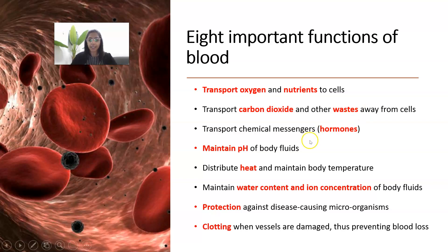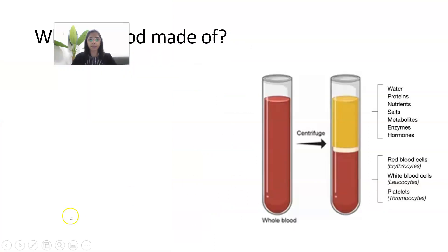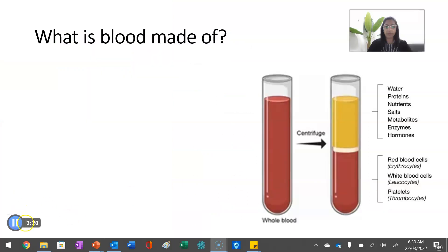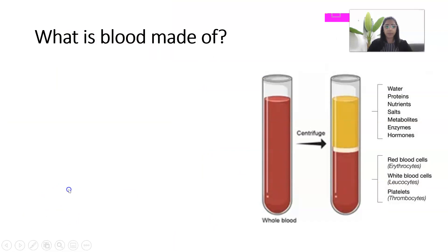Blood protects us against diseases, and it forms clots to prevent blood loss in the event of any mechanical damage. Now that we understand the functions of blood, we're going to look at what it's made of.